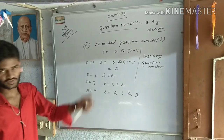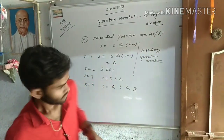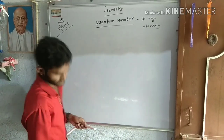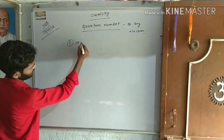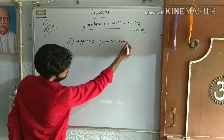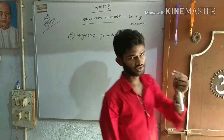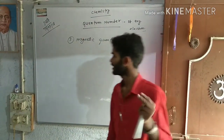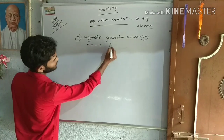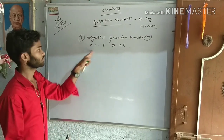तीसरा quantum number के बारे अब हम discuss करेंगे। Third quantum number का नाम है magnetic quantum number, जिसको denote करते हैं M से। Magnetic quantum number का formula है: M = −L to +L। यानि L का value जितना आएगा, उसको M में put कर देंगे।